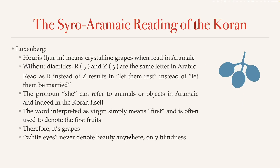Luxenberg says that Hurin technically means 'crystalline grapes' when read in Aramaic. In Aramaic, white can refer to grapes. He says the Muslims have got the Hur part right — Hur means white in both Arabic and Aramaic — but in Aramaic, white can specifically refer to grapes. Even in the Quran, when it talks about wine in paradise, it describes it as white. Everything in paradise is perfect, pure, crystalline. That's why it makes sense to use 'white' when describing things in paradise, particularly because it's already an established word for vines, wine, and high-quality grapes, with whiteness symbolizing purity.